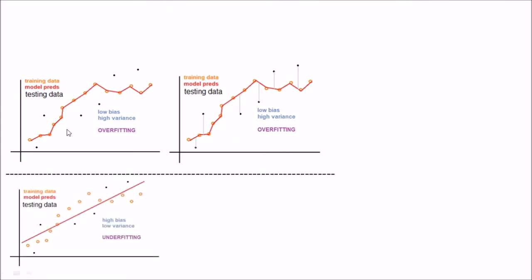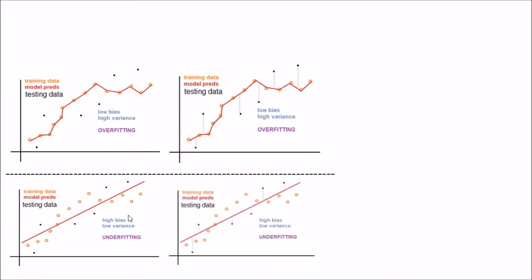Now just imagine that instead of the squiggly line we created, we fit a straight line to this model. When I check how the model is doing on the testing data, I see it is doing moderately well — on some points it does a pretty good job, but not on the other points. Also, this model is not accurately describing the relationship of age and IQ.